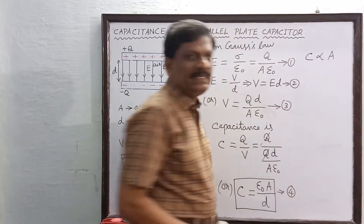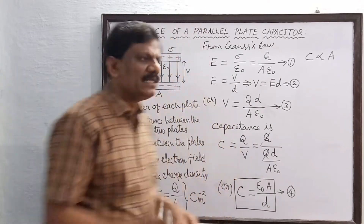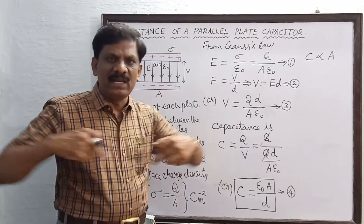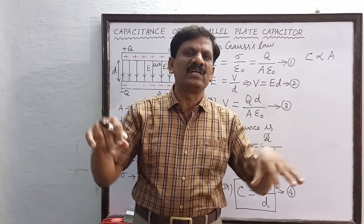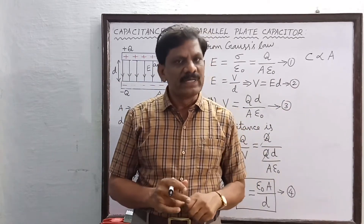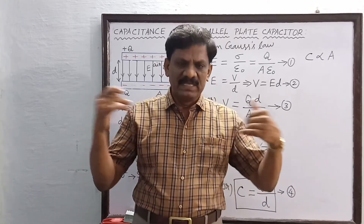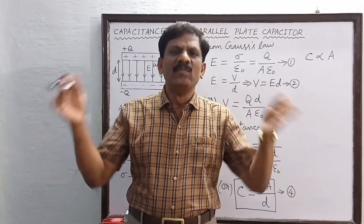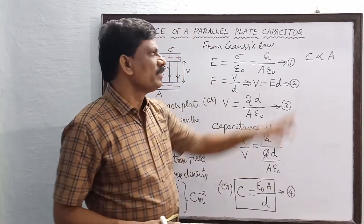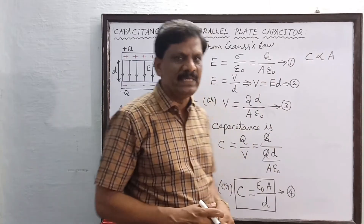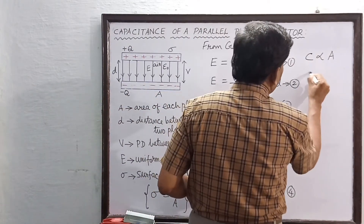When the area of the plates is very large, more quantity of charges can be stored for the same potential difference. When the area is very large, a greater quantity of charges can be stored, and hence the capacitance increases. That is why C is directly proportional to A.